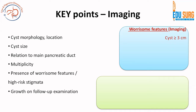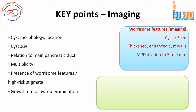What are worrisome features on imaging? The size should be greater than 3 centimeters, thickened and enhancing cyst walls, main pancreatic duct dilatation more than 5 mm - that is when an IPMN is defined. If the MPD is more than 5 mm, it is an IPMN. So MPD dilatation of 5 to 9 mm with or without a compressive effect, and non-enhancing mural nodules or solid components in the cyst - these are the worrisome features on imaging, three features of the cyst and MPD dilatation.